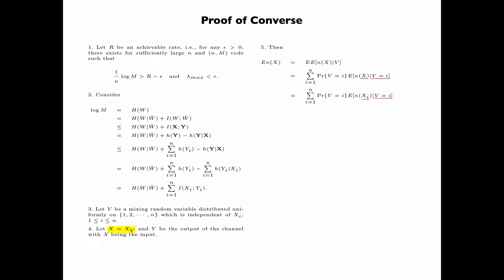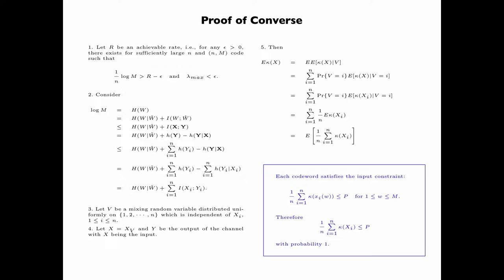The probability that V equals i is 1/n. Taking the expectation outside, we obtain the expectation of 1/n times the summation over i of kappa(X_i). We assume that each codeword in the codebook satisfies the input constraint. Then the input sequence X, which is a randomly chosen codeword, satisfies the input constraint with probability 1. That is, 1/n times the summation over i of kappa(X_i) is less than or equal to P with probability 1. Therefore, this expectation is less than or equal to P.